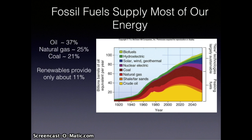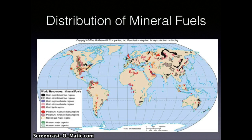Renewable energy resources make up approximately 11 percent of our generating capacity, but this is expected to change over the next century. This slide shows the distribution of the world's mineral fuels. Reviewing this map: what parts of the world have the greatest abundance of coal, which parts seem to have the greatest abundance of oil, and which continent has the fewest mineral fuel resources?